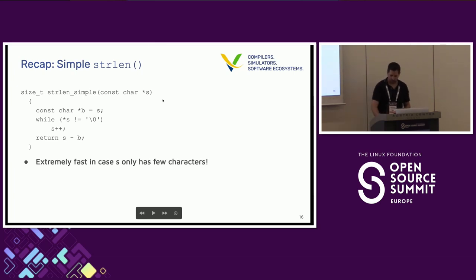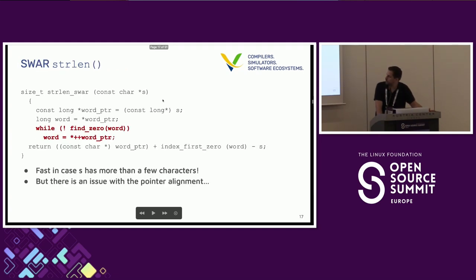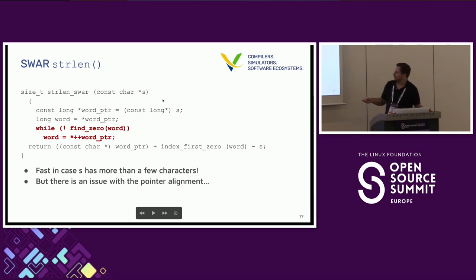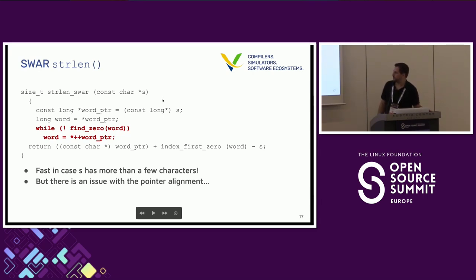Let's come back to strlen and how we use this. We take the function we had before. If we want to use this new find_zero function, we simply read the words, try to find zero. In case we found zero, we need to go out and find the first occurrence of the zero byte, then calculate the result. In case we don't have a zero, we simply increase the pointer and search the next word.